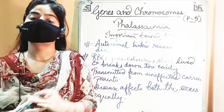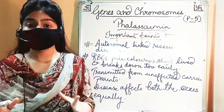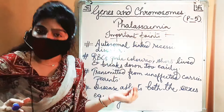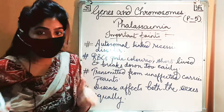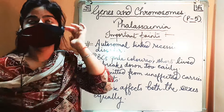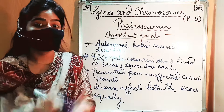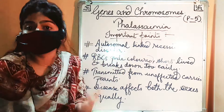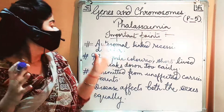Hello everyone, welcome back to my channel, science tutorial 04. In this video I am going to begin with the next Mendelian disorder which is thalassemia. First of all, it is an autosomal linked recessive disorder. I covered autosomal linked and X-linked recessive and dominant in my previous video, so you can visit that video to get it in detail.